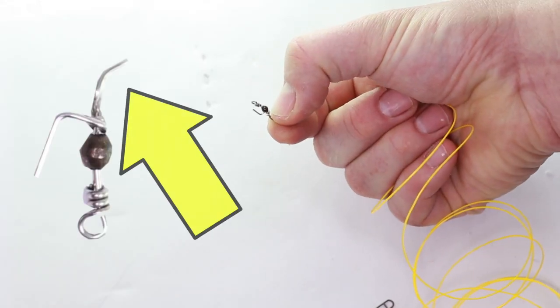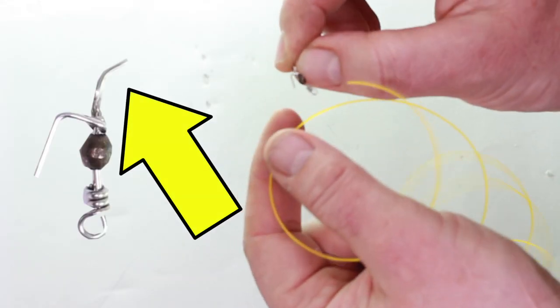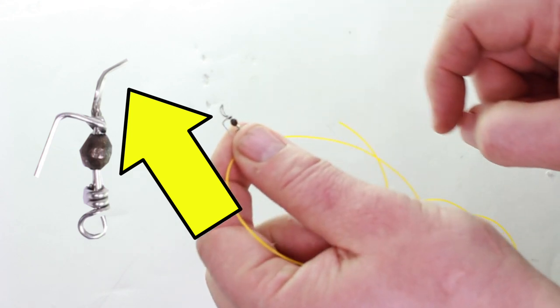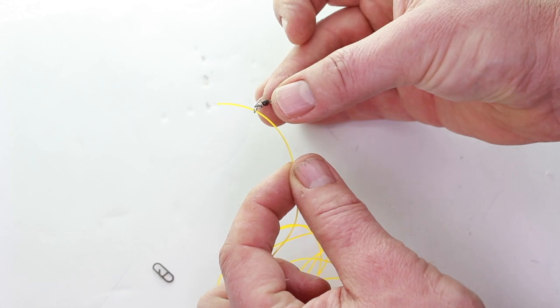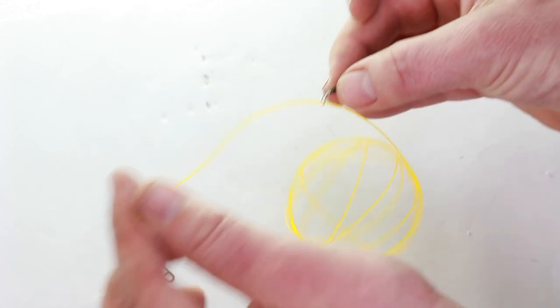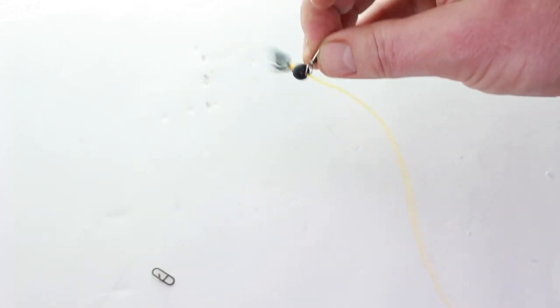Now you want to take your cascade swivel next and thread that down the line. It's important to make sure the cascade swivel's the right way round as well. The offset eye will be running along the main line of the rig.